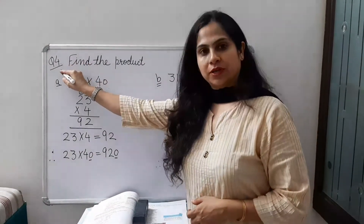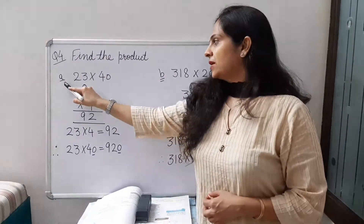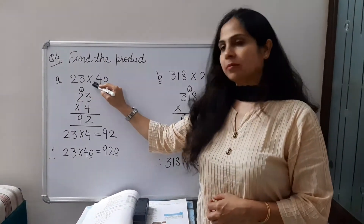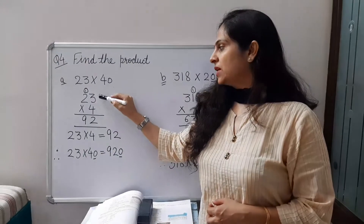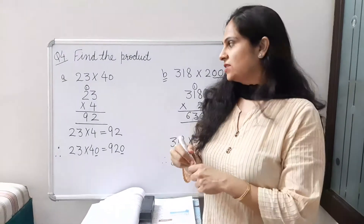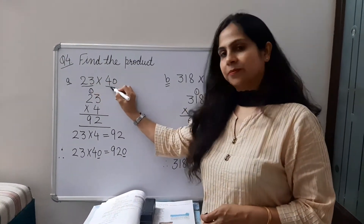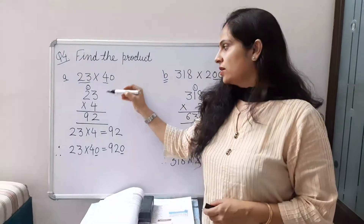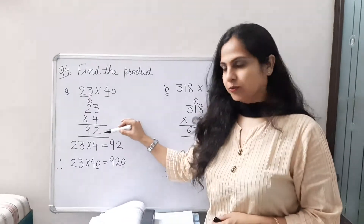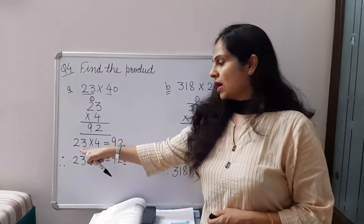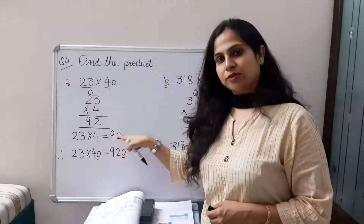Question number 4 is find the product. Part A is 23 multiplied by 40. Here we will multiply non-zero numbers first, that is we will multiply 23 with 4. 23 multiplied by 4 is 92, so our answer is 92.